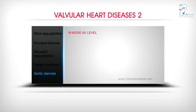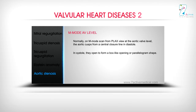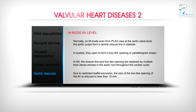M-Mode at AV Level: Normally, on M-Mode scan from PLAX view at the aortic valve level, the aortic cusps form a central closure line in diastole. In systole, they open to form a box-like opening or parallelogram shape. In AS, the closure line and the box-like opening are replaced by multiple thick dense echoes in the aortic root throughout the cardiac cycle. Due to restricted leaflet excursion, the size of the box-like opening of the AV is reduced to less than 15 mm.